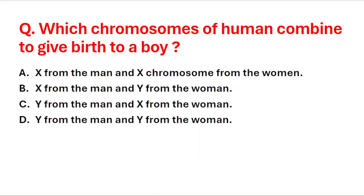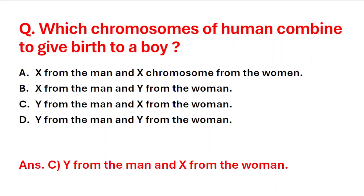Next question: which chromosomes of humans combine to give birth to a boy? A: X from men and X from women, B: X from men and Y from women, C: Y from men and X from women, D: Y from men and Y from women. The right answer is C — Y chromosome from the men and X chromosome from the women.